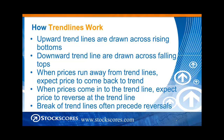Some simple rules. When prices run away from the trend line, we expect price to eventually come back to that trend. When prices come into the trend line, we expect prices to reverse at the trend line. So if a stock is moving in an upward trend and it runs up a little too quickly, it will probably pull back to that straight upward trend line, and when it gets there it will bounce, reverse, and continue in the upward trend.